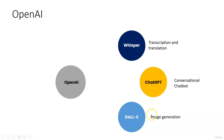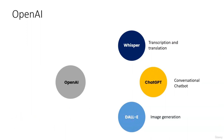DALL-E is about image generation. If you give a phrase — for example, 'a picture is worth a thousand words' — the AI systems in DALL-E will generate images that correspond to that phrase. We are going to see this specific example when we discuss DALL-E in detail.